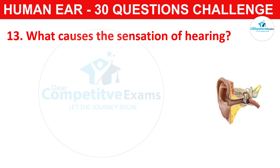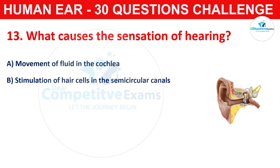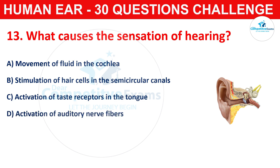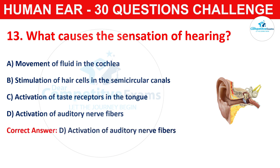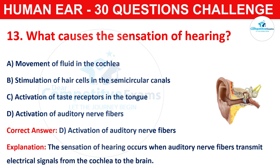Question number thirteen: what causes the sensation of hearing? The options are movement of fluid in the cochlea, stimulation of hair cells in the semicircular canals, activation of taste receptors in the tongue, or activation of auditory nerve fibers. The correct answer is D, that is activation of auditory nerve fibers. The sensation of hearing occurs when auditory nerve fibers transmit electrical signals from the cochlea to the brain.